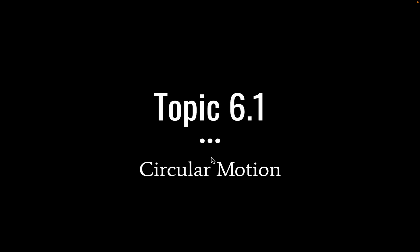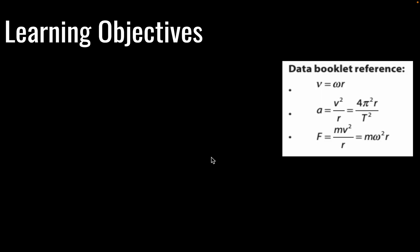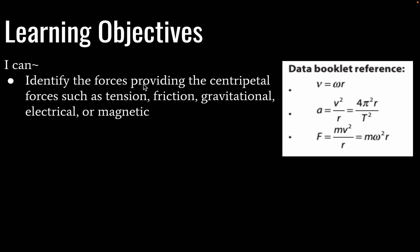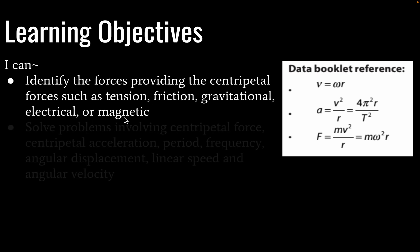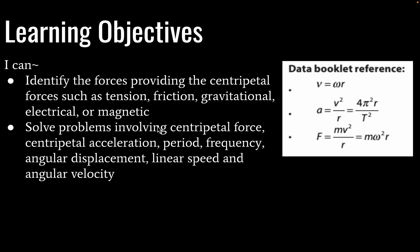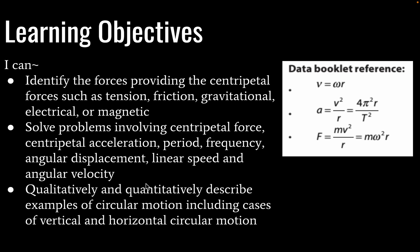Today we're going to take a look at topic 6.1, which involves circular motion. Our learning objectives: by the end of this lesson, you'll be able to identify the forces providing centripetal force — those forces could include tension, friction, gravitational, electrical, or magnetic force. You'll be able to solve problems involving centripetal force, as well as acceleration, period frequency, angular displacement, linear speed, and angular velocity.